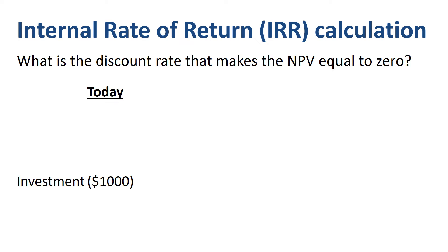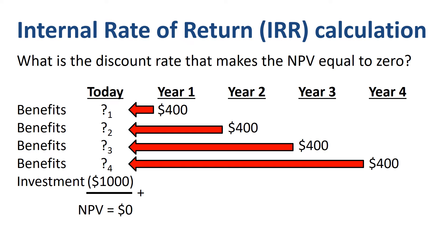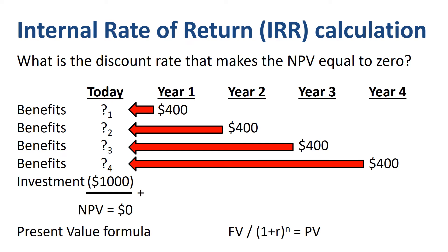So we start at the bottom of the page. We want the outcome of the NPV calculation to be zero. For the present values of the benefits we now have question mark 1, question mark 2, question mark 3, and question mark 4. We don't know what numbers need to be in those four places, but we'll soon find out. The future values of $400 nominally per year somehow lead to these question mark numbers. So we need to play around with the discount rate in the present value formula to get all of that to add up to an NPV of zero.